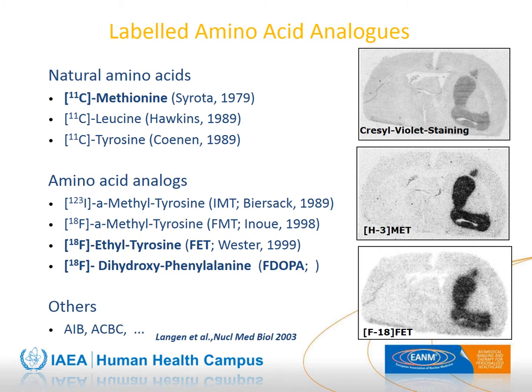Several labeled amino acid analogs can be used for brain tumor imaging. Natural amino acids include carbon-11-methionine, which due to the short half-life of carbon-11, can only be used for PET in centers with an on-site cyclotron. However, other amino acid analogs such as FET and fluorodopa can also be used for brain imaging with PET in sites without an on-site cyclotron, thanks to labeling with fluorine-18.